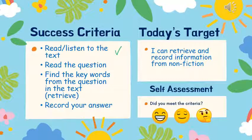So, a new slide for you — a new part of the video that you'll see in all lessons now. Our target today is: I can retrieve and record information from nonfiction. We also have success criteria — how are you going to achieve that? The steps are: read or listen to the text, read the question, find the key words from the question in the text, retrieve, and record your answer. It might not make sense now, but we'll go through it again at the end of the lesson. And then we have some emojis to say whether you met the criteria.